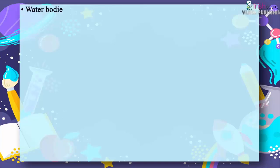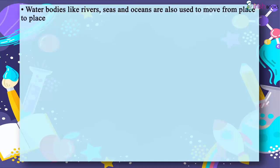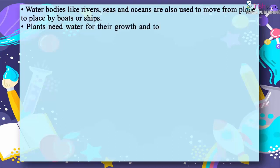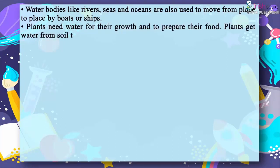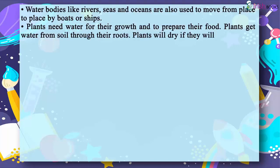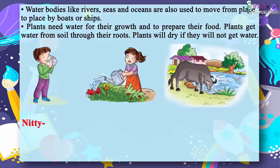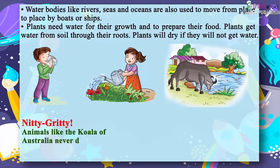Water bodies like rivers, seas and oceans are also used to move from place to place by boats or ships. Plants need water for their growth and to prepare their food. Plants get water from soil through their roots. Plants will dry if they do not get water. Interestingly, some animals like the koala of Australia never drink water.